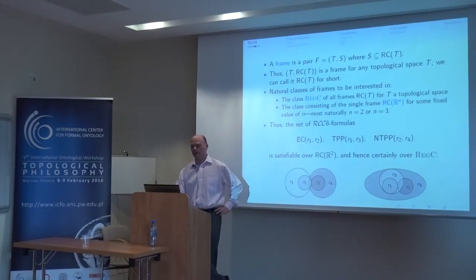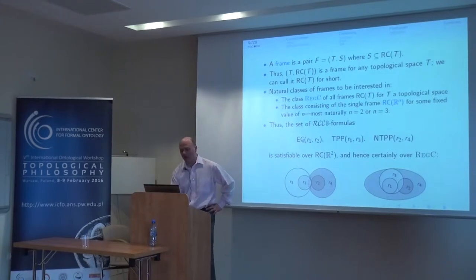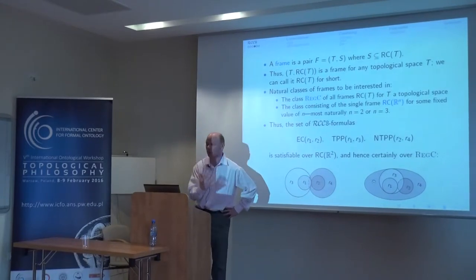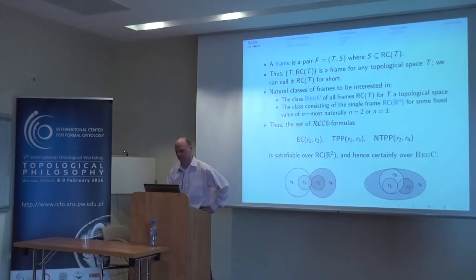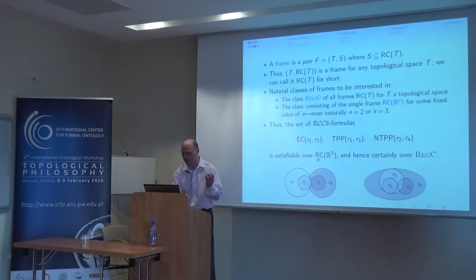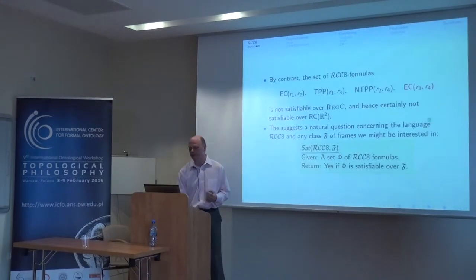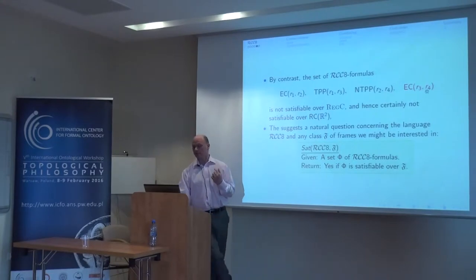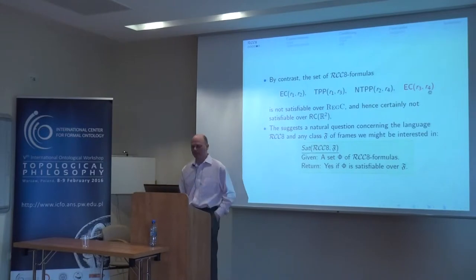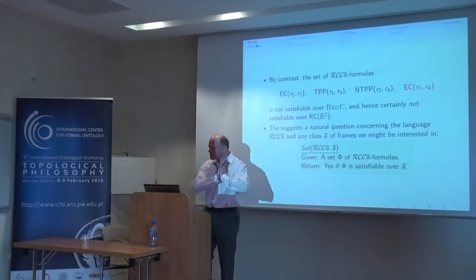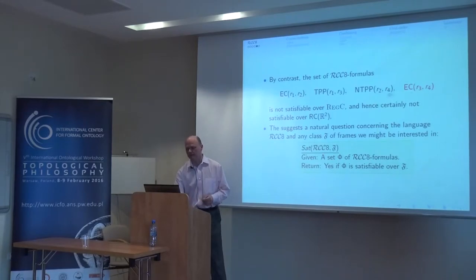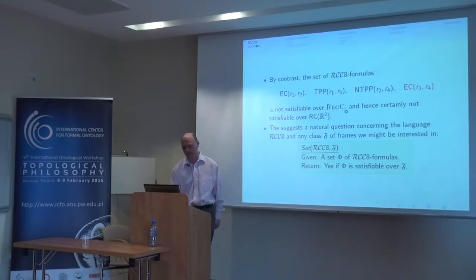I've given an example of an RCC8 formula. That formula is satisfiable over the frame of regular closed sets in the Euclidean plane, and here are two examples showing that. By contrast, if I add the extra formula — this extra constraint — the resulting set of formulas is not satisfiable over any regular closed algebra, and therefore it's not satisfiable over the entire class of frames, the regular closed sets of topological spaces.